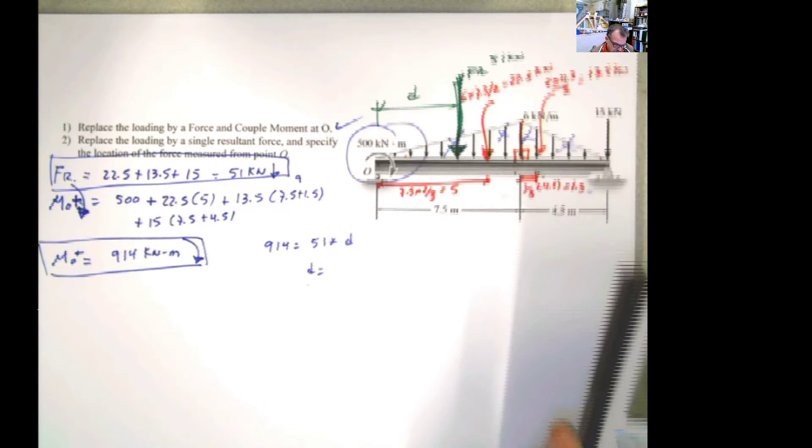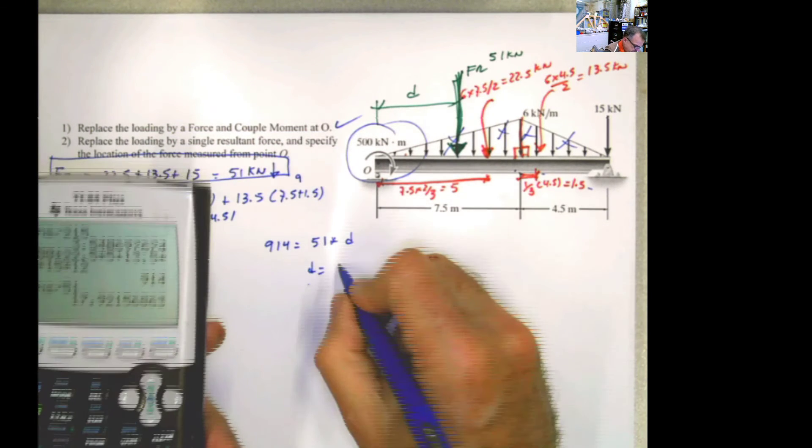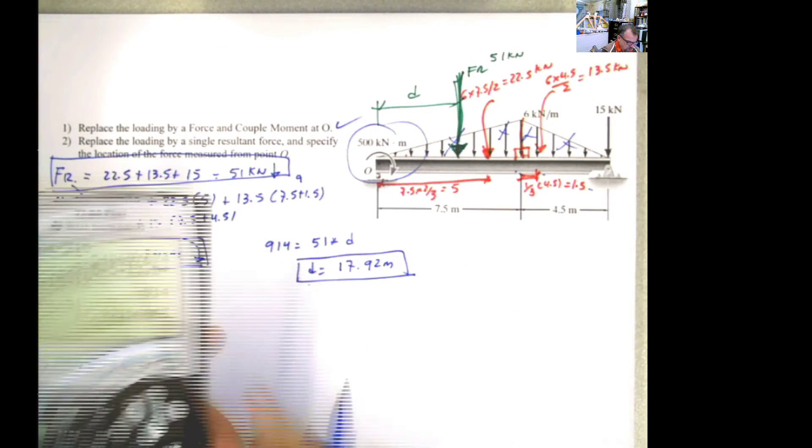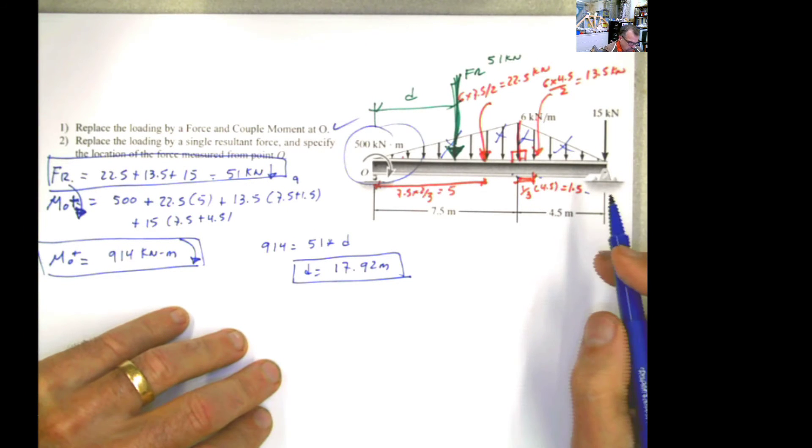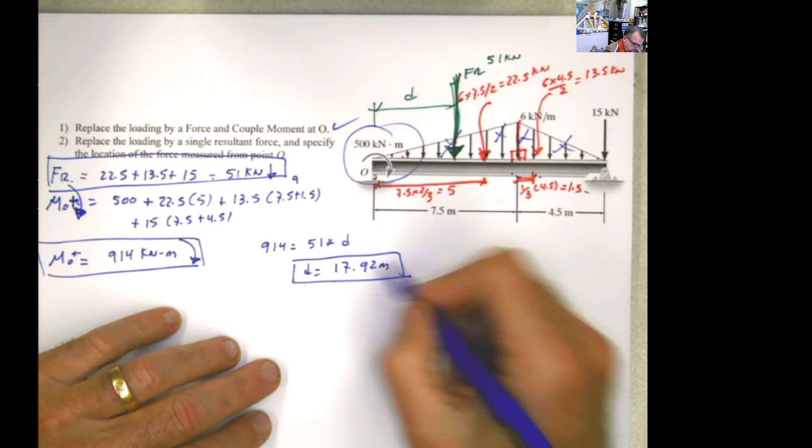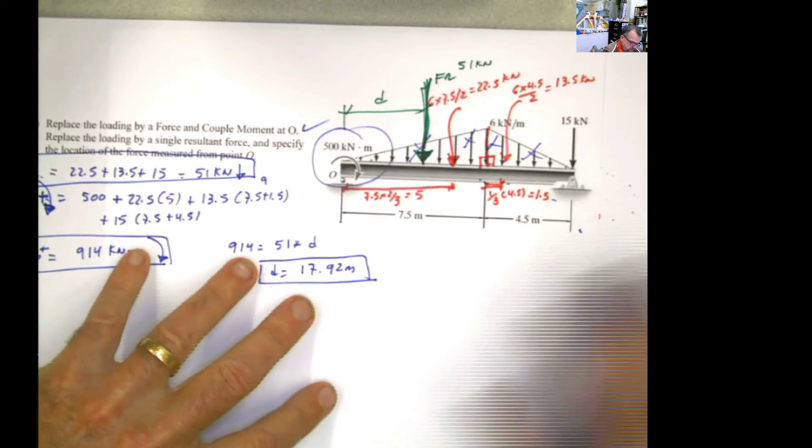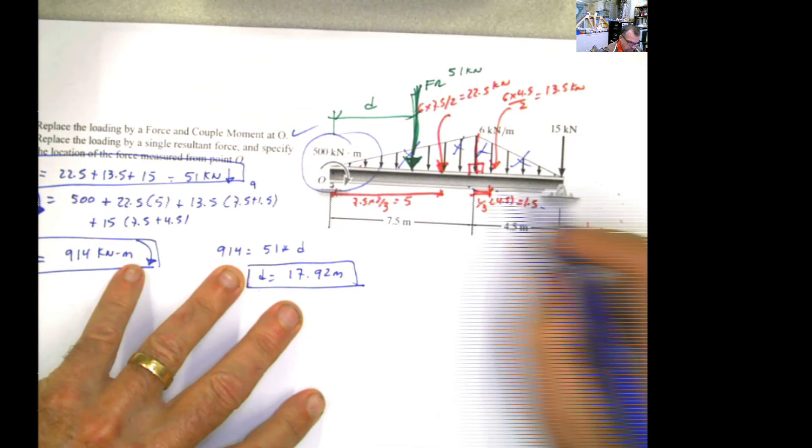When you solve for the distance d, then the distance d is going to be 914 divided by 51, and that's 17.92 meters. And that will be the answer to the problem.